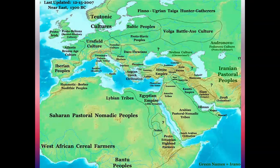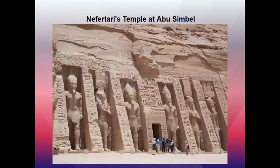A map shows how the Egyptian empire bordered the Hittite empire, with Egypt expanding into areas including Babylonia and Arabia. Images of the temples show they are very large and ornate — the statues are not human-sized but typically 20-plus feet tall, with great detail that becomes more apparent the closer you get.